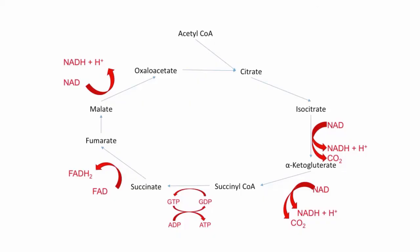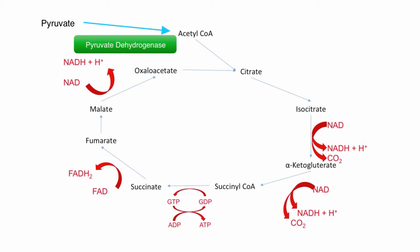In this video, we are going to cover the enzymes that are involved in the Krebs cycle. As we mentioned once before in another video, the enzyme that assists the transformation of pyruvate into acetyl-CoA is pyruvate dehydrogenase.